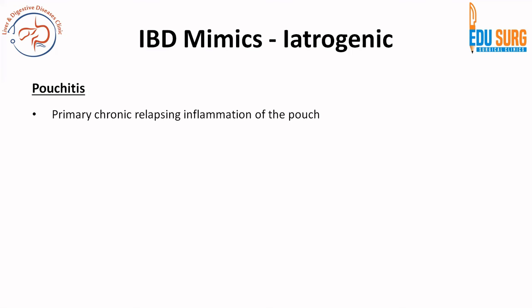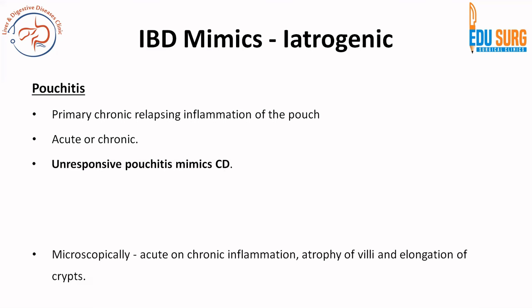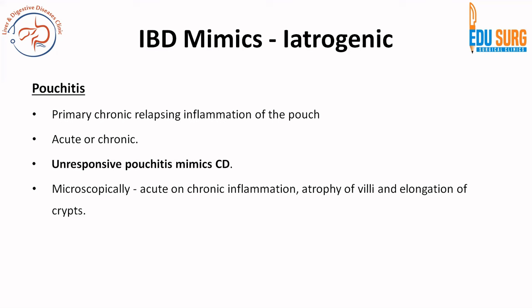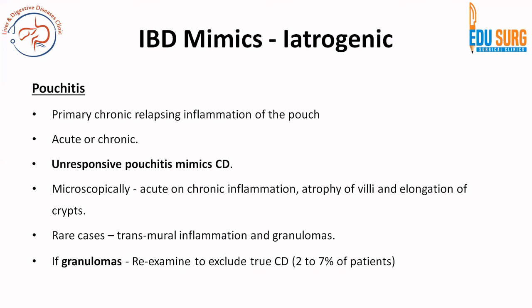The second iatrogenic issue is pouchitis. Pouches are created for total proctocolectomy surgeries after IBD. If there is primary chronic relapsing inflammation of the pouch, that is pouchitis — it can be acute or chronic. However, if pouchitis is unresponsive, it can mimic Crohn's disease. Microscopically there will be acute or chronic inflammation, atrophic villi, and elongation of crypts. In very rare cases, pouchitis can have transmural inflammation and granulomas, so we need to rule out Crohn's disease. This is seen in 2 to 7% of patients. It is always important in the iatrogenic section to look at slides taken before starting treatment or before surgery.